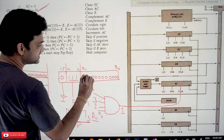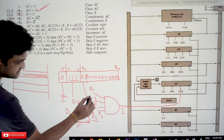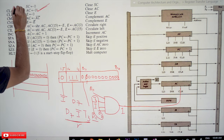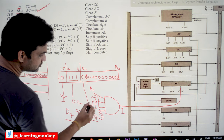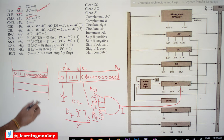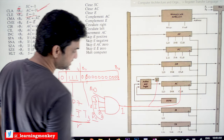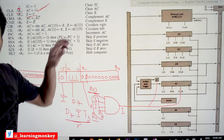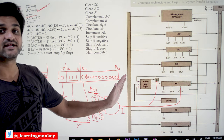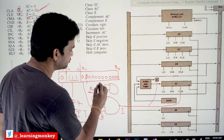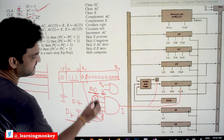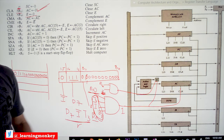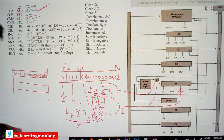Similarly, instead of b11, if b10 is 1, the same common part — d7, i-complement, and t3 — must still be true, confirming it is a register reference instruction. If r is true and b10 is true, we have to make E equal to 0. We take another AND gate where the b10 value is provided as input. If all those inputs are true, a 1 is generated, and the E flip-flop is cleared — its value is made to 0. This is how the CE (clear E) instruction gets executed.